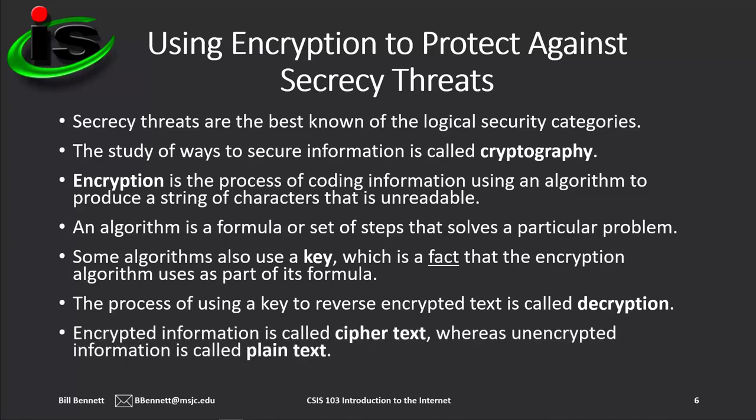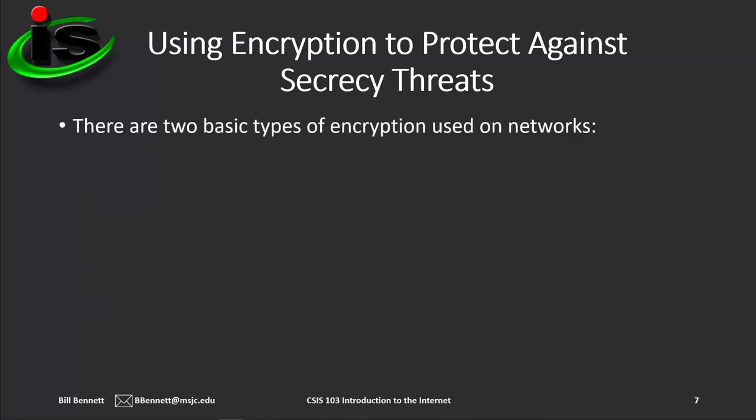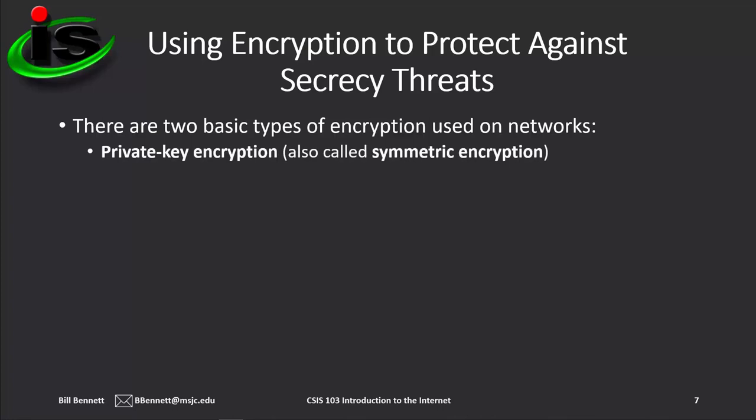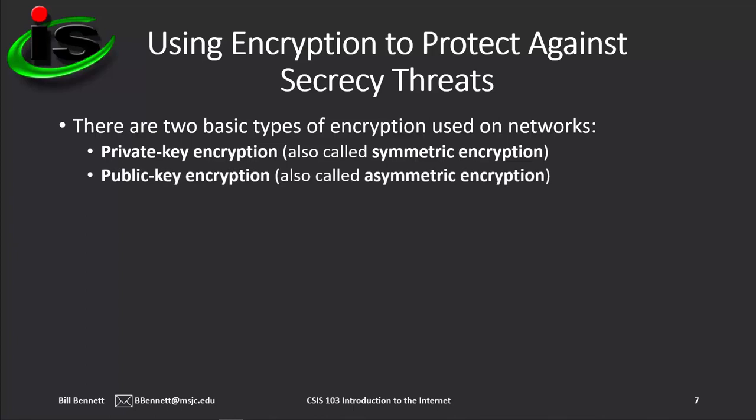Encrypted information is called ciphertext, whereas unencrypted information is called plaintext. People who write programs or manipulate technologies to obtain unauthorized access to computers and networks are called crackers or hackers. There are two basic types of encryption used on networks: private key encryption, also called symmetric encryption, and public key encryption, also called asymmetric encryption.